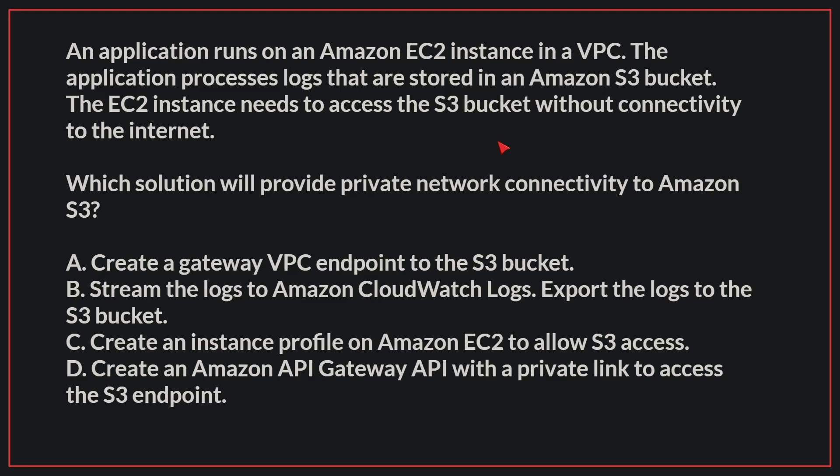An application runs on an Amazon EC2 instance in a VPC. The application processes logs that are stored in an Amazon S3 bucket. The EC2 instance needs to access the S3 bucket without connectivity to the internet. Which solution will provide private network connectivity to Amazon S3?